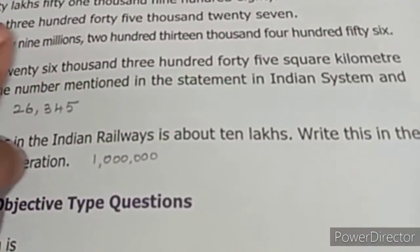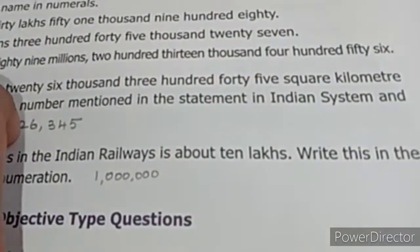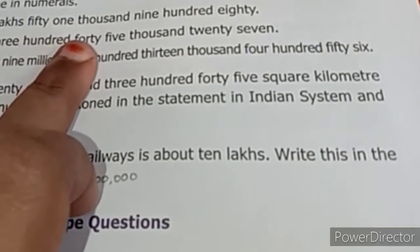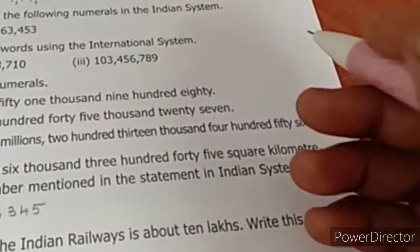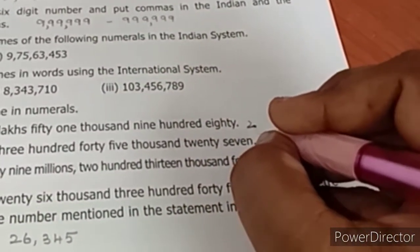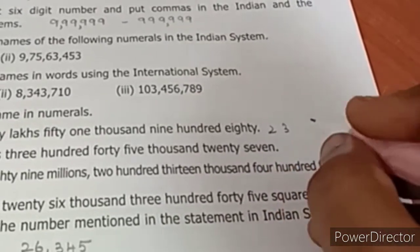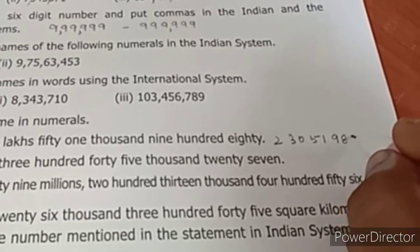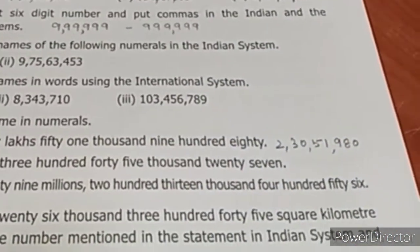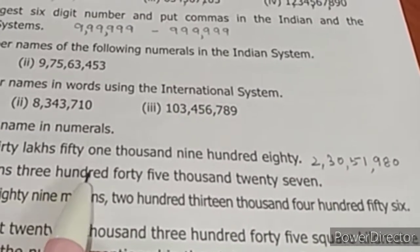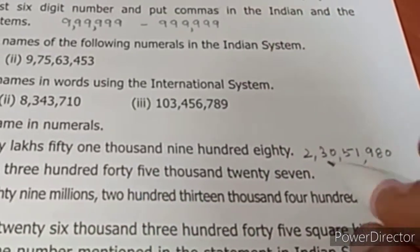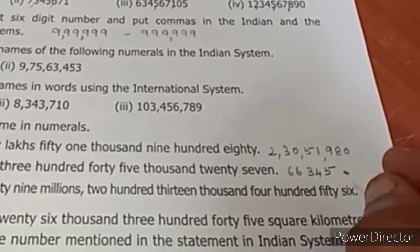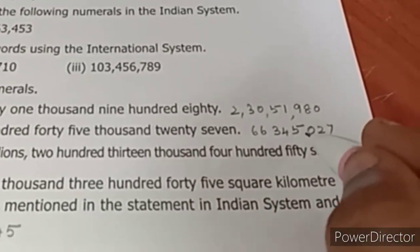Write the number name in numerals — they have given words, we write the number. Two crore, thirty-nine lakhs, fifty-one thousand, nine hundred and eighty. I will write it: two crore, thirty lakhs, fifty-one thousand, nine hundred and eighty — with commas to segregate. Next: sixty-six million, three hundred and forty-five thousand, twenty-seven — written with commas like this.